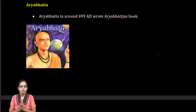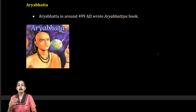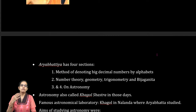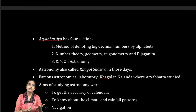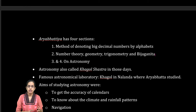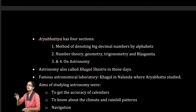Aryabhat wrote a book known as Aryabhatia, which was divided into four volumes. The first volume talked about decimal numbers. The second volume talked about geometry, trigonometry, and algebra, which is the Beach Ganit. The last two volumes, volume three and four, focused on astronomy or Khagol Shastra.